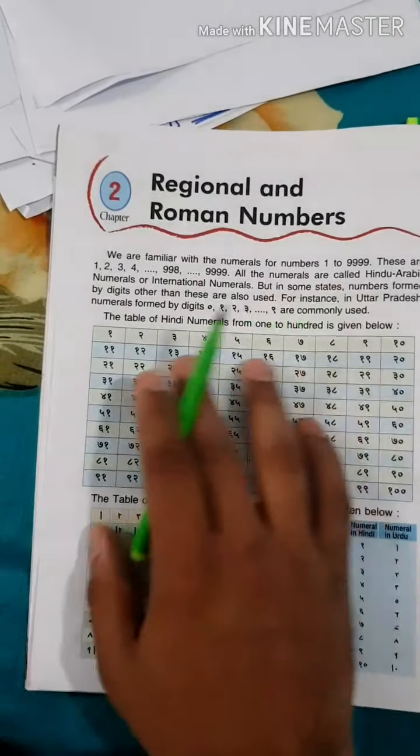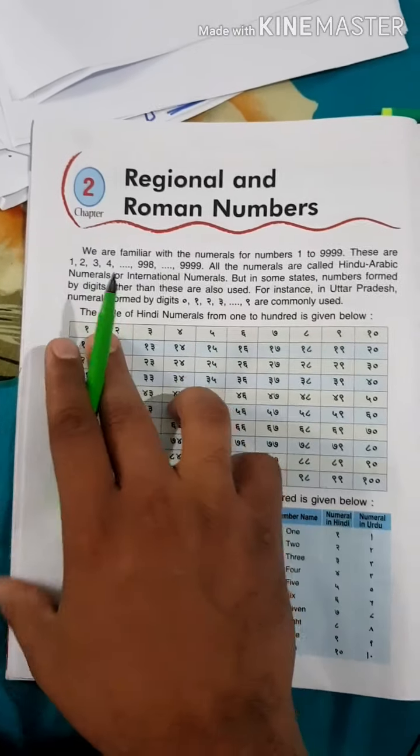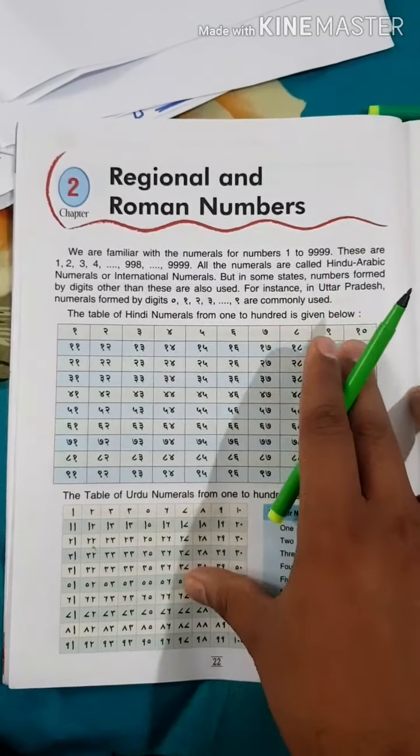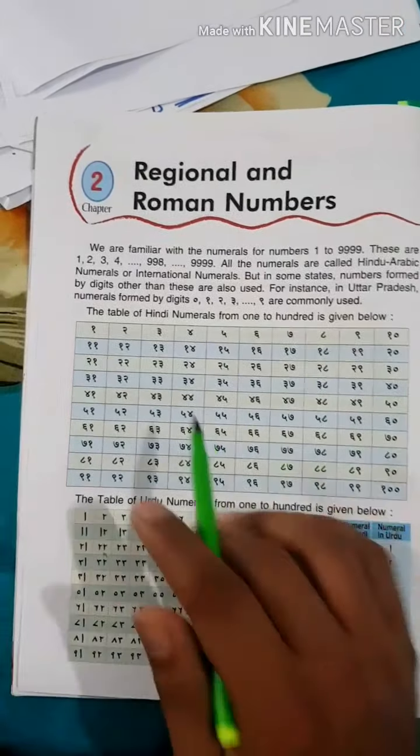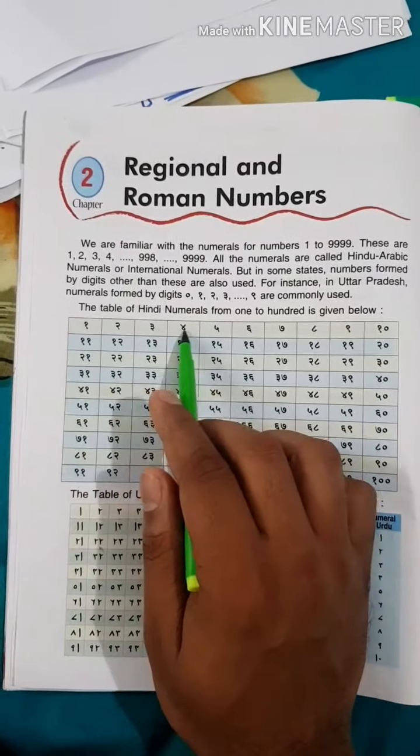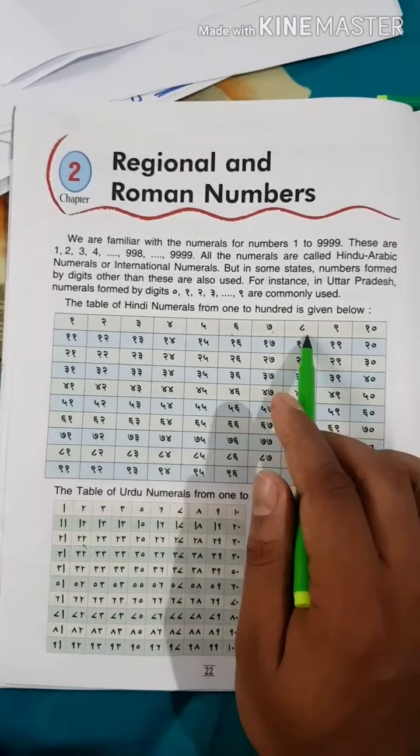Students, please draw this table in your fair copy. The table of Hindi numerals from 1 to 100. This table please draw in your fair copy. Here it is given 1, 2, 3, 4, 5, 6, 7, 8, 9, 10, in this manner.